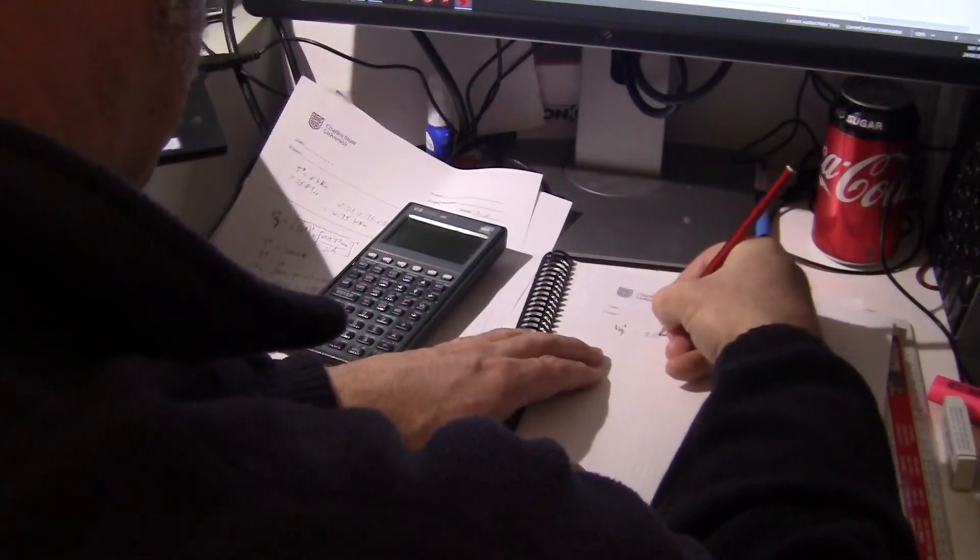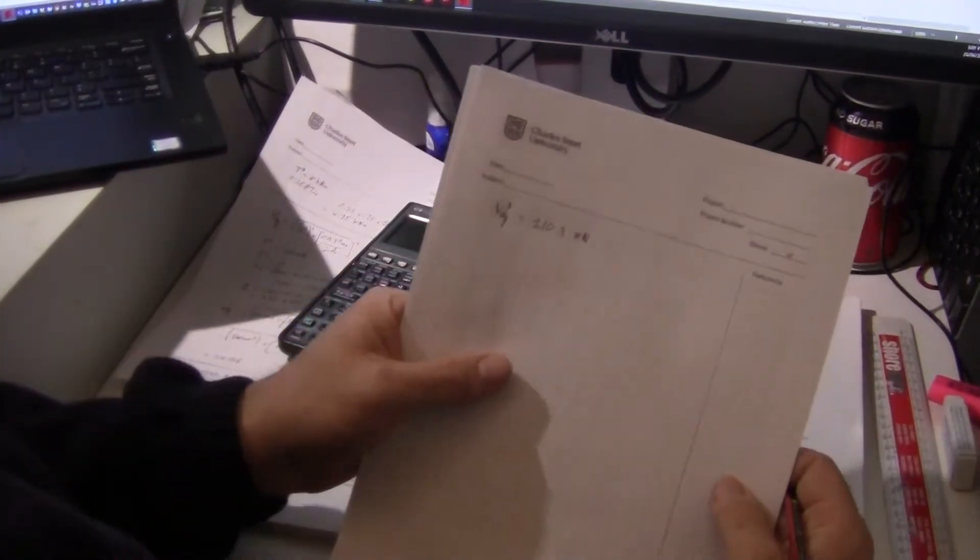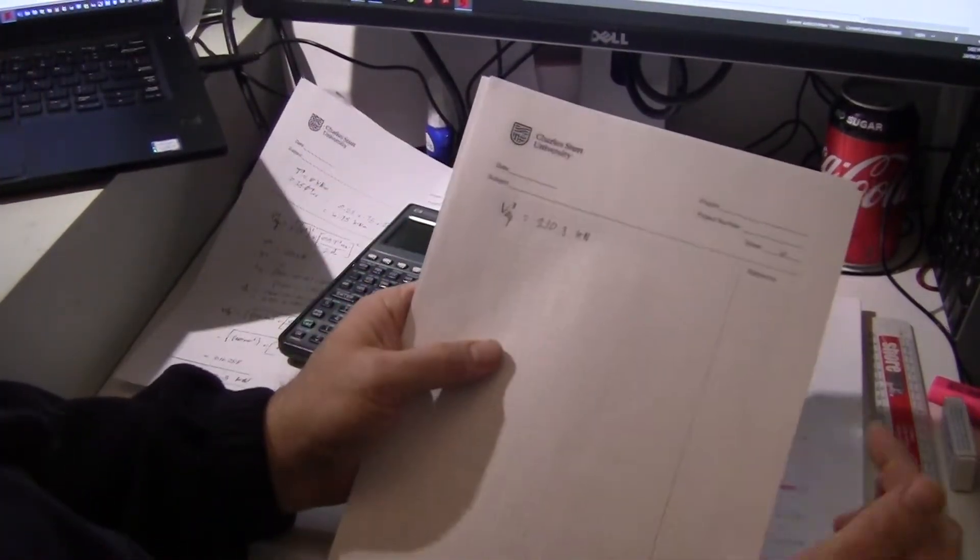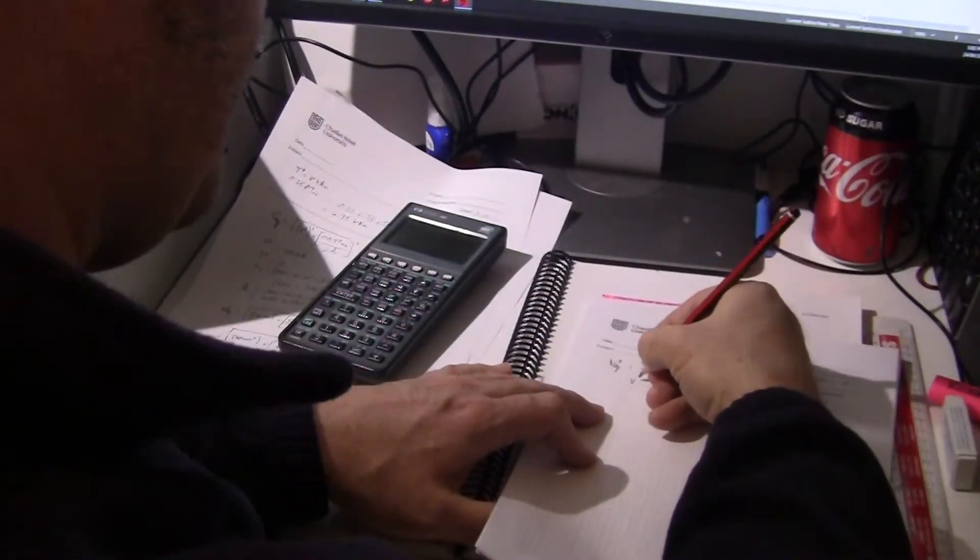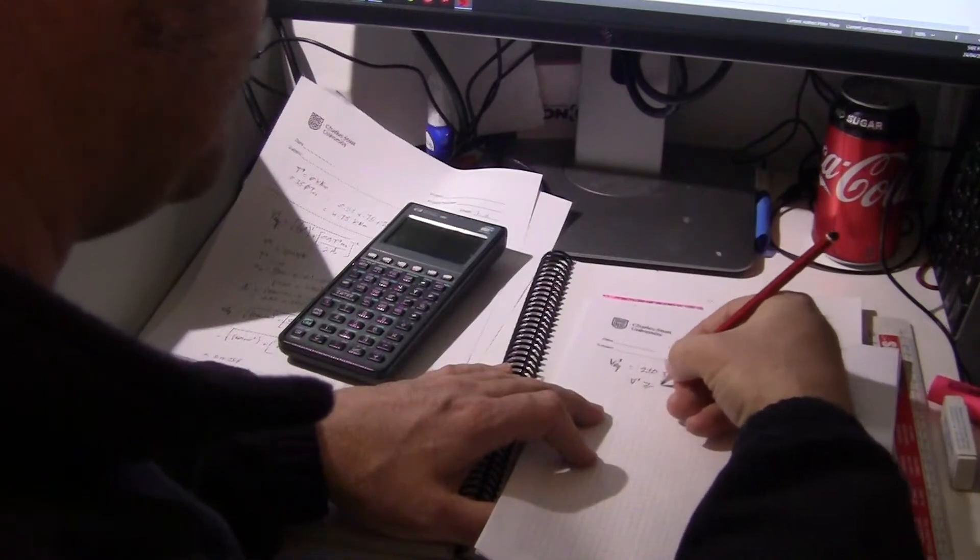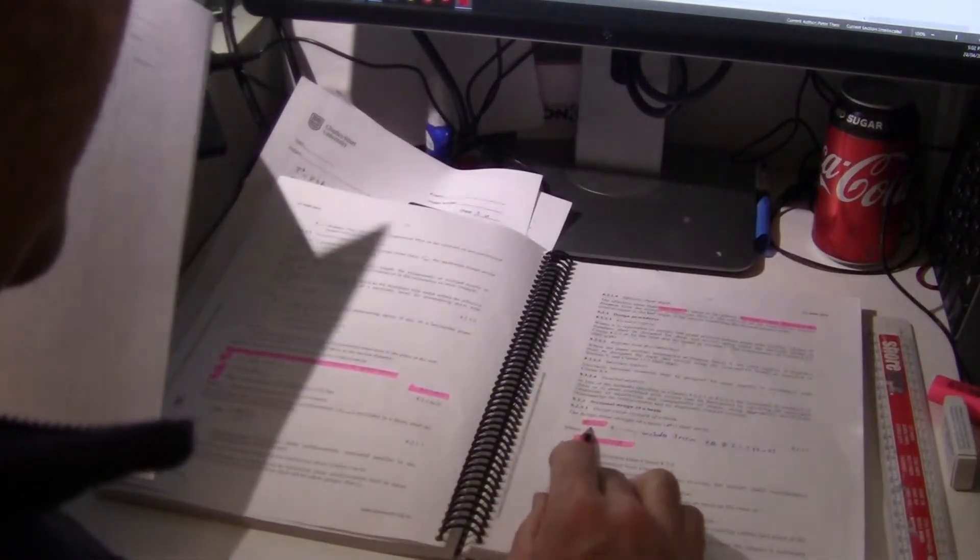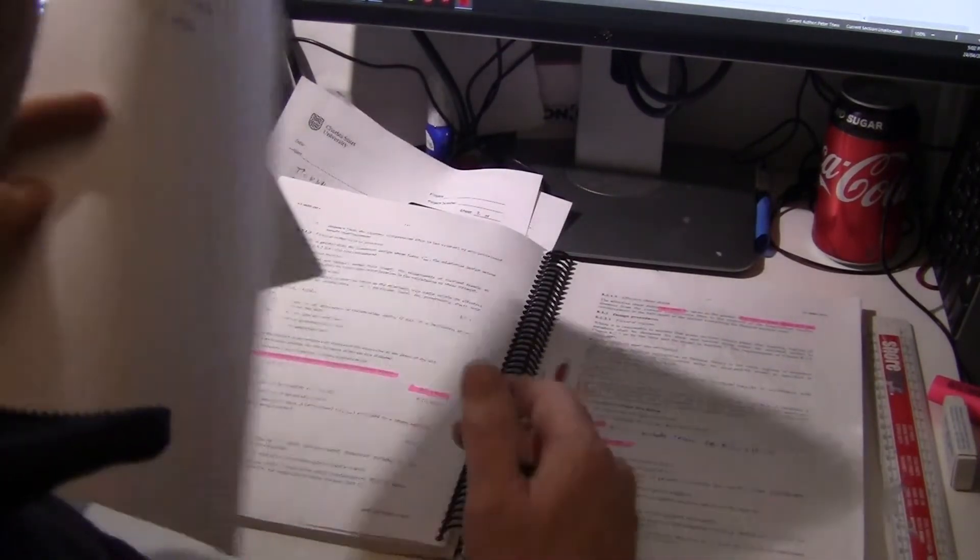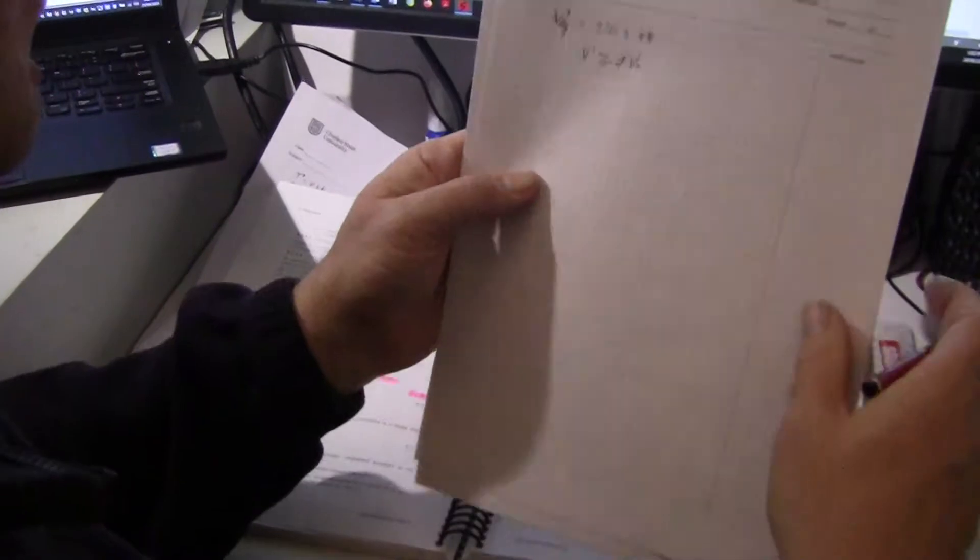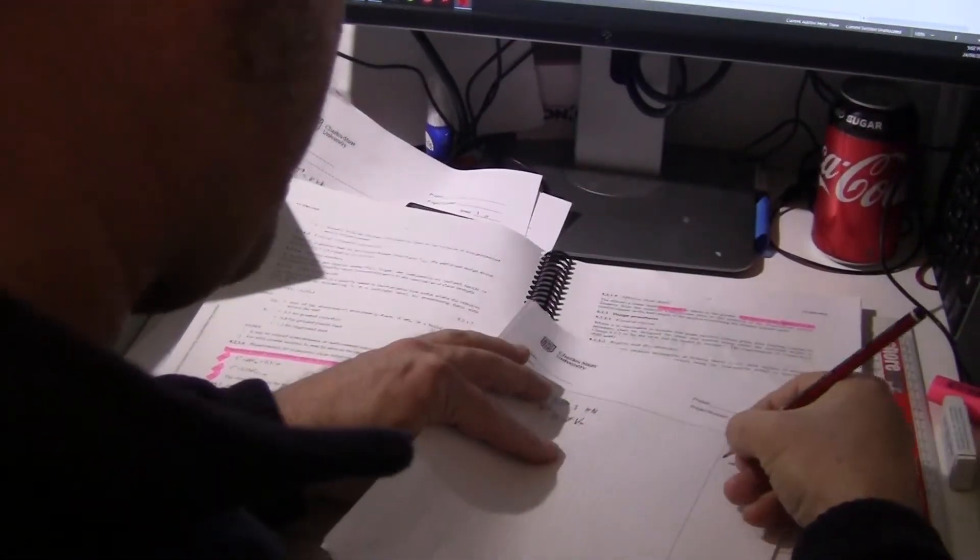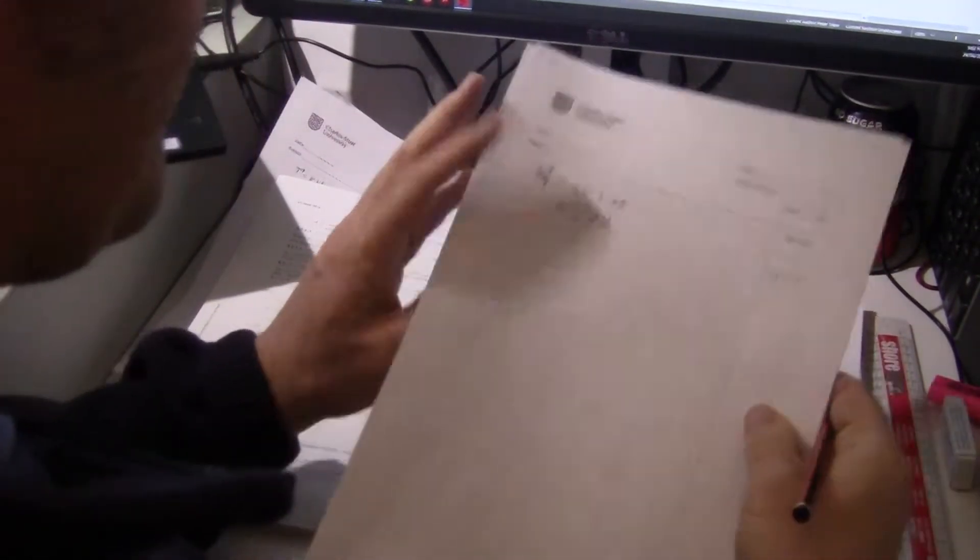We have V equivalent equals 210.3 kilonewtons, so that is an equivalent shear force which takes into account the torsion, and we have to make sure this beam can take that load. We know that V star must be greater than or equal to phi V U. That is over here, clause 8.2.3.1 - that just says our equivalent shear load has got to be greater than the capacity.